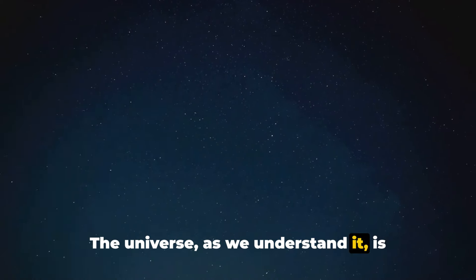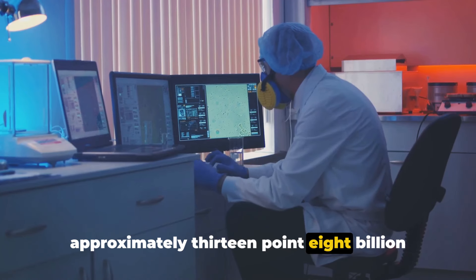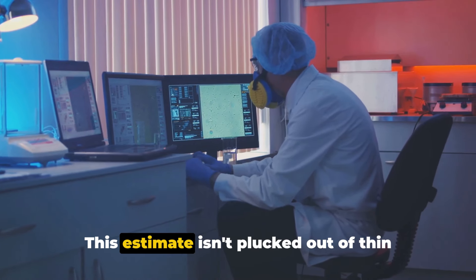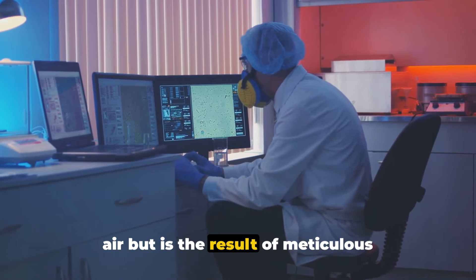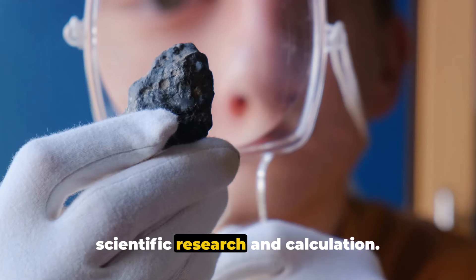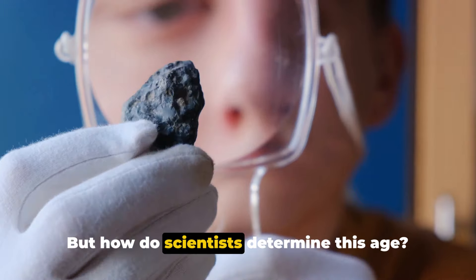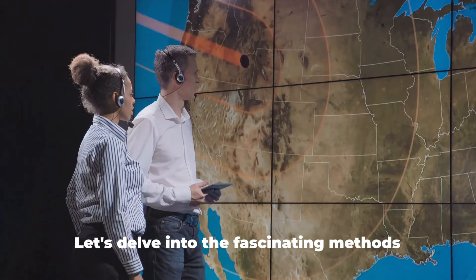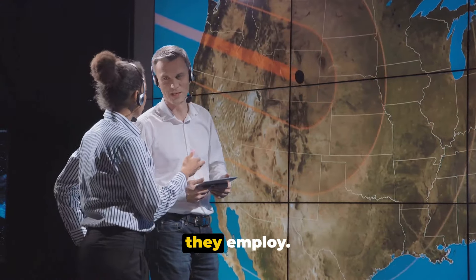The universe, as we understand it, is approximately 13.8 billion years old. This estimate isn't plucked out of thin air, but is the result of meticulous scientific research and calculation. But how do scientists determine this age? Let's delve into the fascinating methods they employ.